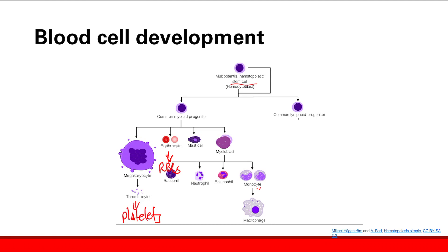Platelets from megakaryocytes — that's something you want to remember, you'll hear about that later. Red blood cells from erythrocytes, you get mast cells. And then from the myoblasts, you get basophils, neutrophils, eosinophils, macrophages.